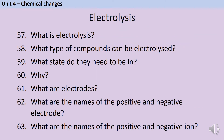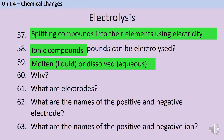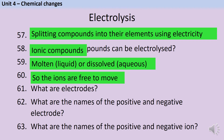Electrolysis is the process of splitting apart compounds into their elements using electricity, and it can be carried out on ionic compounds provided that they are either molten or aqueous — in other words, dissolved. The substance needs to be molten or aqueous because this allows the ions to move. If it's a solid ionic compound, the charged particles are held in place by the strong electrostatic force of attraction.